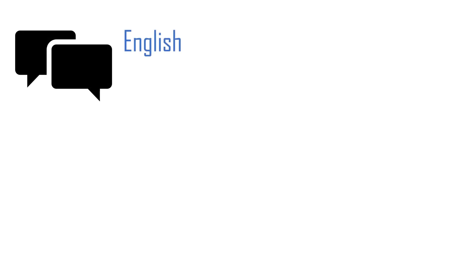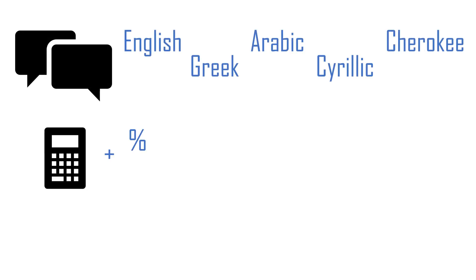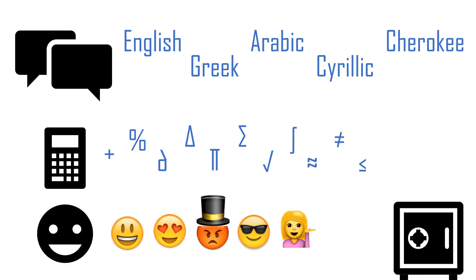Languages such as English, Greek, Arabic, Cyrillic, and Cherokee, mathematical symbols, emoji, and a large number of privately reserved characters. The code points in Unicode are represented using hexadecimal notation.